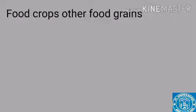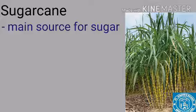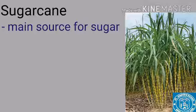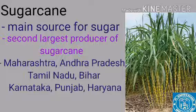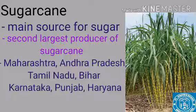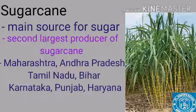The next subtopic is food crops other than food grains. The first one is sugarcane. Sugarcane is the main source of sugar, gur, khandsari, and molasses. India is the second largest producer of sugarcane. It is cultivated in Maharashtra, Uttar Pradesh, Tamil Nadu, Andhra Pradesh, Bihar, Punjab, and Haryana. Sugarcane grows in hot climatic temperatures between 21 to 27 degrees Celsius with annual rainfall of 75 to 100 centimeters, and can be grown in a variety of soils.